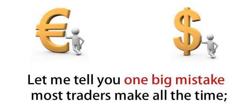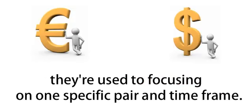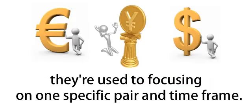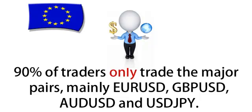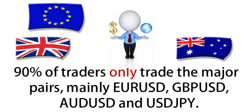Let me tell you one big mistake most traders make all the time. They're used to focusing on one specific pair and time frame. 90% of traders only trade the major pairs, mainly the Euro, the Cable, the Aussie and the Yen.